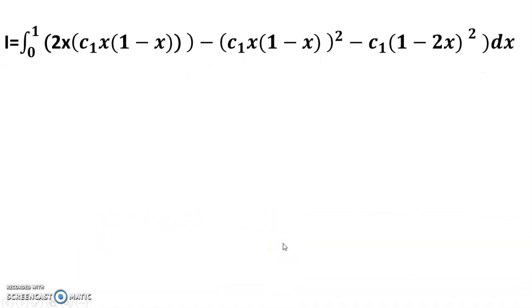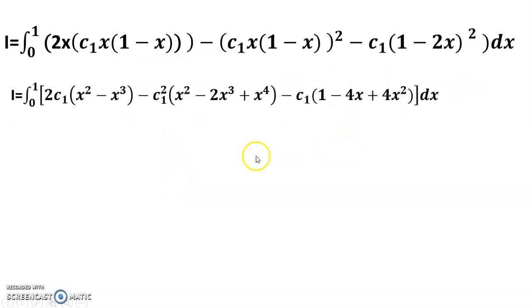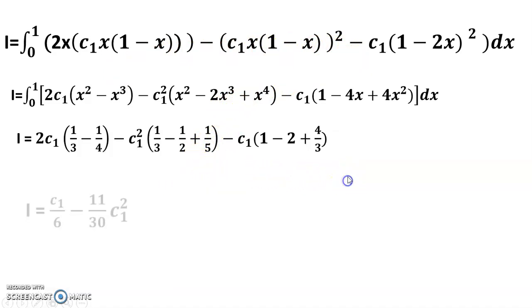Putting the values into the integral, using the formula (a minus b) whole square, I get I is equal to c one by six minus eleven by thirty c one square.